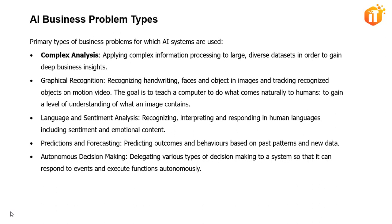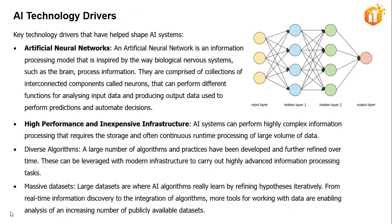Apart from business drivers, there are technology drivers as well. We will cover the key technology drivers that have helped shape contemporary artificial intelligence. The first is artificial neural networks — sophisticated computing systems based on how the human brain functions and processes information. They are comprised of collections of interconnected components called neurons, which can perform different functions for analyzing input data and producing output data used to perform predictions and automate decisions.